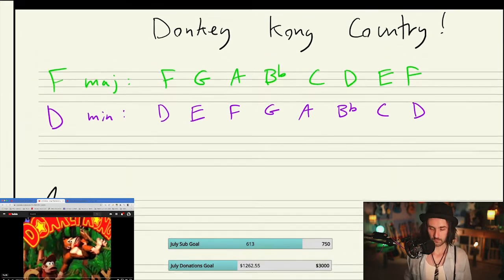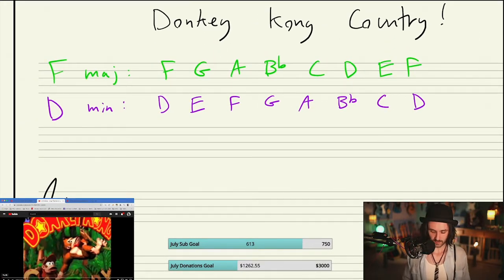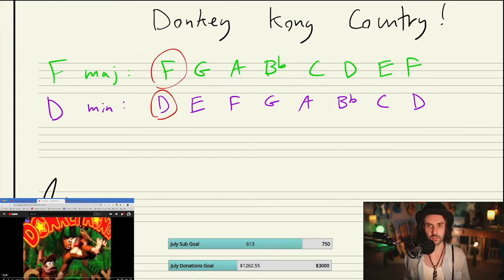two totally different scales it seems. We start on F with this one, that's weird, that's very different than D. So these must be different scales. F G A B flat, this is D E F. Okay, these are totally different scales, but watch this.